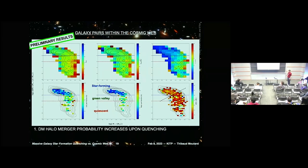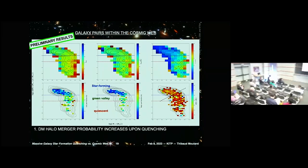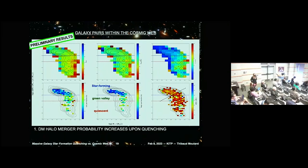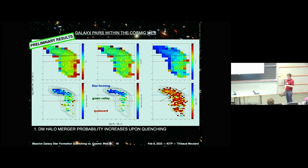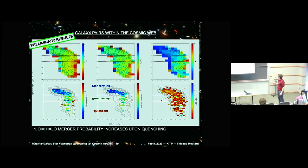Comment: A while ago I found an increase in red disks at a specific radius outside a cluster — disk galaxies that had already started quenching, just outside the virial radius — but you're excluding all of that, right? Response: In principle yes — we are really looking at massive galaxies far from clusters. The typical density of the massive galaxies in the sample is around the typical density of the universe, so these are not clustered galaxies.